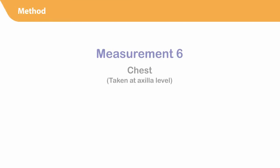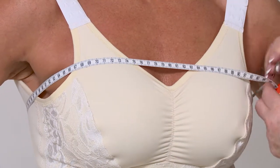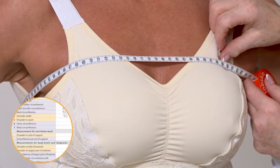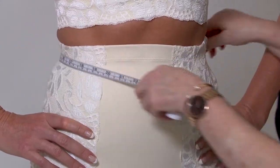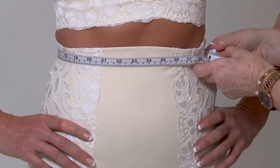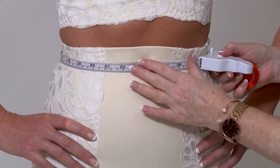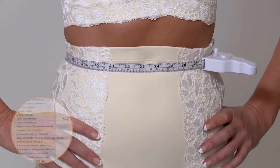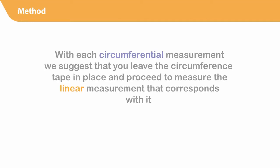Measurement number six: chest circumference is taken at axilla level. This measurement is taken for both male and female patients. Measurement number seven: using the circumference tape, measure the patient's waist circumference.